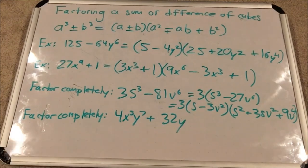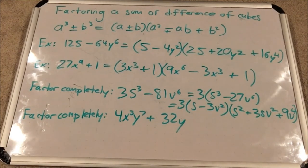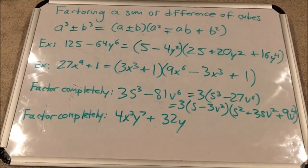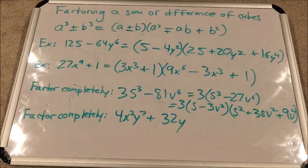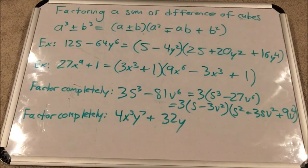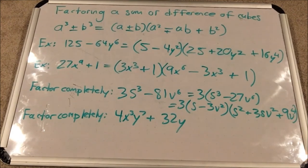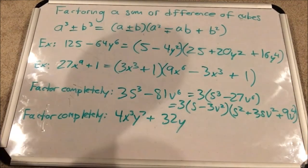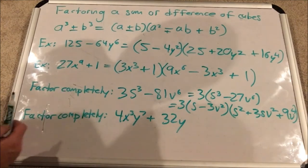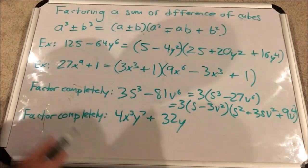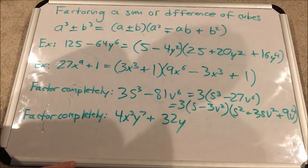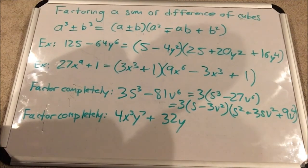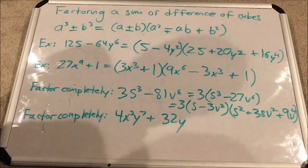And this last example, your final exam for x cubed y to the 7th plus 32 y. This looks mind-bogglingly not like a sum or difference of two cubes. I can't take the cube root of 4. I can't take the cube root of y to the 7th. I can't take the cube root of 32 or y. Oh my goodness. Well, first, you will then, if you can't do that, you will factor out the greatest common factor.